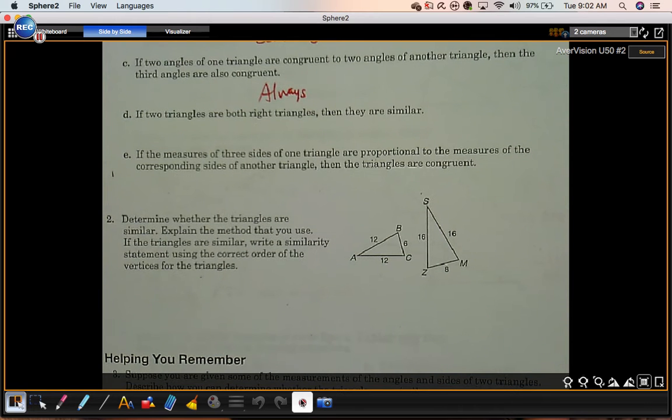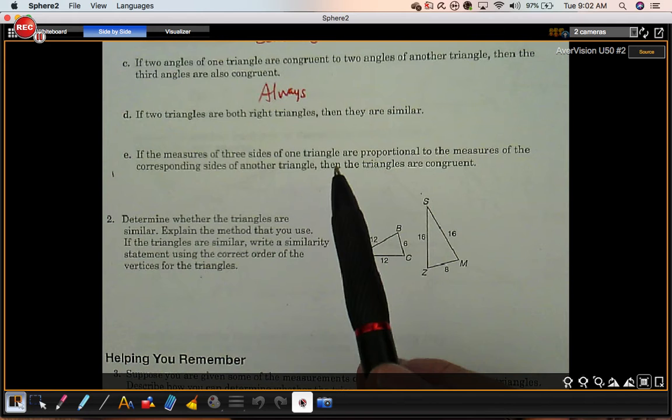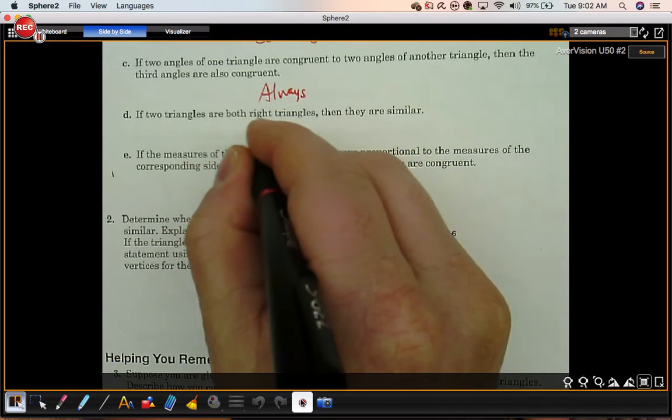Part D. If two triangles are both right triangles, then they are similar. That's not enough information to say that they definitely are. You can have two right triangles that are similar, and you can have two right triangles that are not similar. So we're going to put sometimes on this.